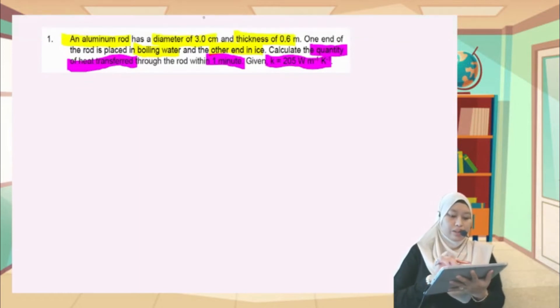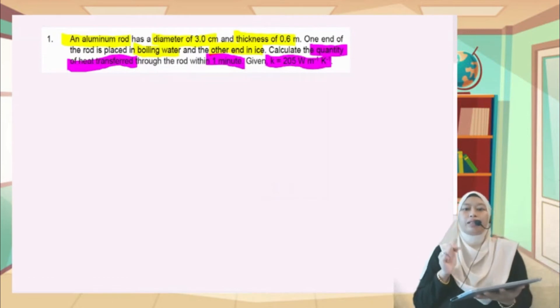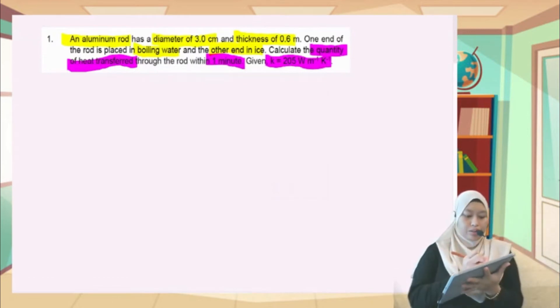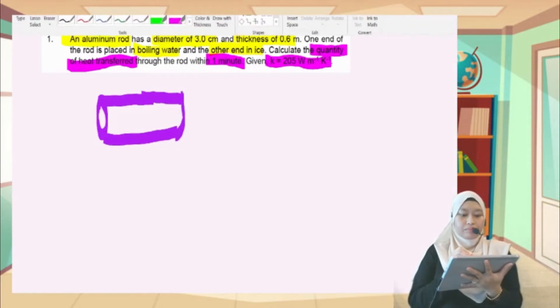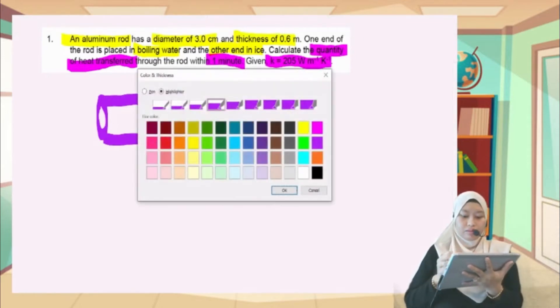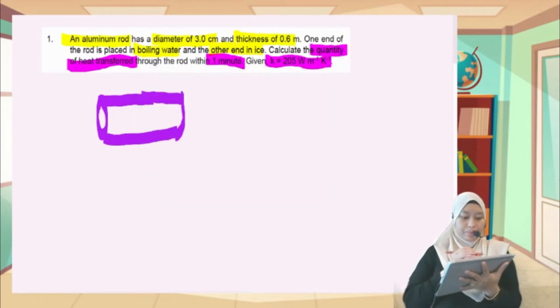So now what we're going to do is sketch the situation. Here we're going to sketch the aluminum rod.